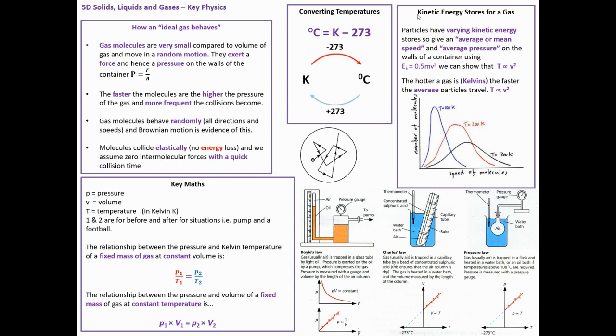We can also think about the particles having a kinetic energy store. They will all have different speeds, but on average, they have an average speed and average pressure. EK is one-half mv squared. We can show that T is proportional to v squared. As v goes up, T goes up, but it's not a linear relationship. The hotter the gas, the faster the particles travel.